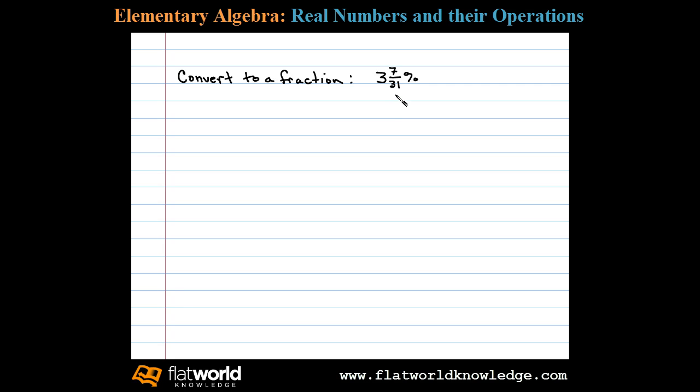Here we're asked to convert 3 and 7/31 percent to a fraction. We begin by converting this mixed number into an improper fraction. 31 times 3 is 93, plus 7 is 100, so this is equivalent to 100 over 31 percent.